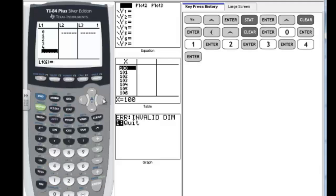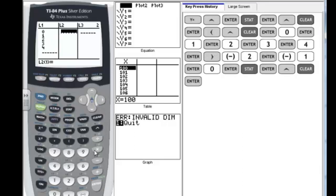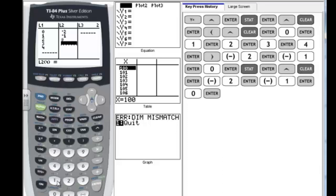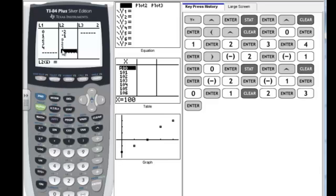And then I arrow over to L2, put in my y values. So I'm going to put in negative 2, enter, negative 1, enter, 0, enter, 2, enter, and 3, enter. Notice I have the same number of x's as y's, that's important, or L1's and L2's.